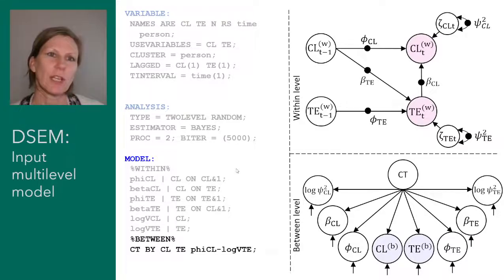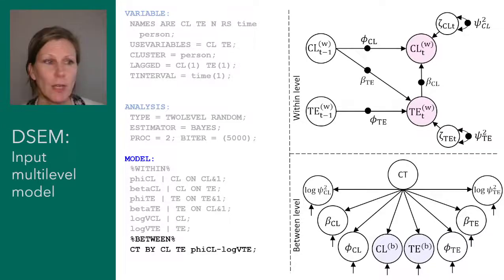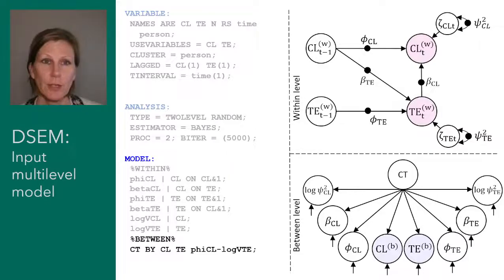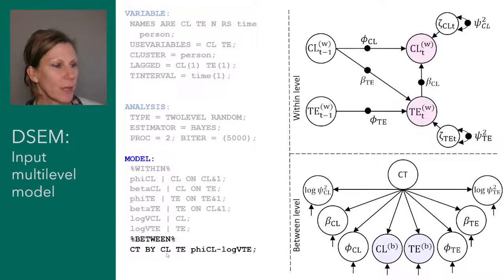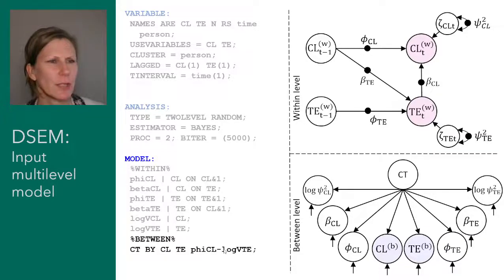What we can do at the between level, instead of allowing all random effects to be correlated with each other, is do structural equation modeling at this level. One thing we could do is specify a common trait — an underlying latent variable — that actually explains the relationships between all the different random effects. This is done at the between level with the by statement, creating a new latent variable referred to as the common trait, CT. This is measured by the within-person means, the random slopes, and the random log residual variances.